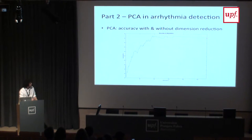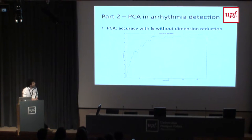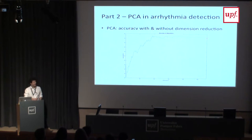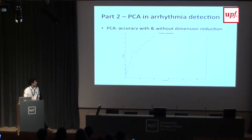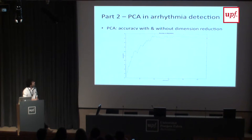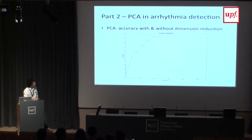We tested accuracy with dimension reduction. The red dot is the model without dimension reduction. As we see, the model is not as good as expected, with accuracy around 75%. As seen in the previous slide, we reach a plateau, and at the dimension where we reach the plateau of information, we also reach maximum accuracy — also around 75%.